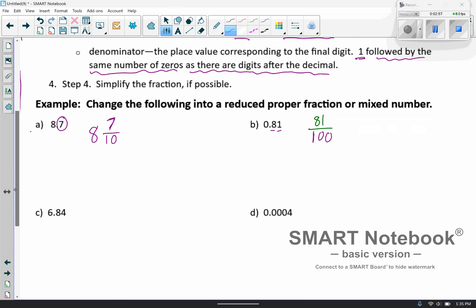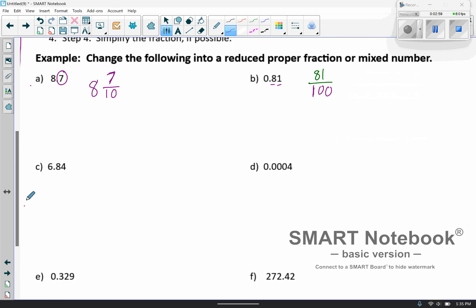All right, moving on to our next example, C. So kind of similar to A, we have 6.84. So we're going to have a mixed number just like A. So we're going to have 6. And then our fraction, which is going to be 84 over and then 1 followed by 2 zeros, so 100. So 6 and 84 one hundredths. But you'll notice that 84 and 100 are both even, so that does mean that we can reduce it.